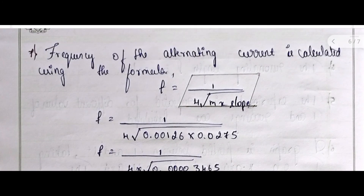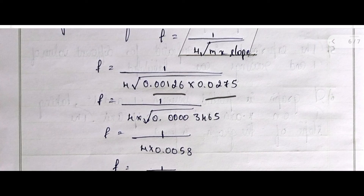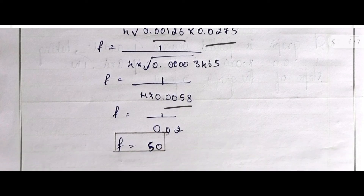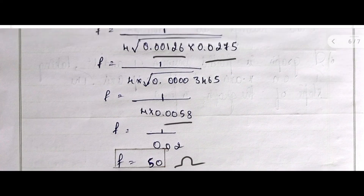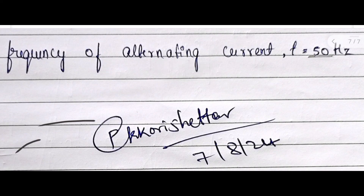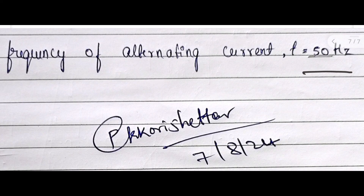Using the slope value in the frequency formula: f = 1/4 × √(m × slope) = 1/4 × √(0.00126 × 0.025), where slope 0.025 is obtained from AB/BC. Simplifying gives 1/4 × 0.0058, which becomes 1/0.02, so f = 50 Hz. This is the frequency of the AC source. In the result section: the frequency of alternating current f is 50 Hz. This is the exact value. Thank you.